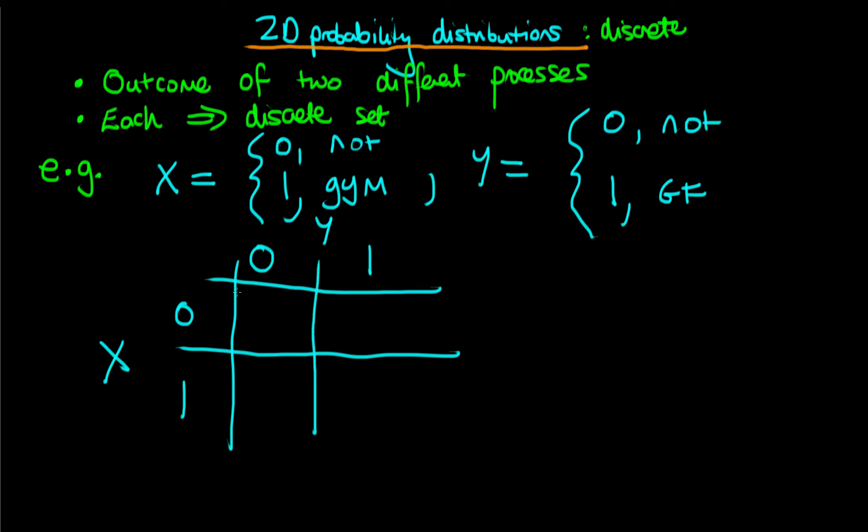So because we're dealing with discrete outcomes, we can associate a probability with each of these four possible combinations. Let's say the probability that an individual does not go to the gym and does not have a girlfriend is equal to 0.1.